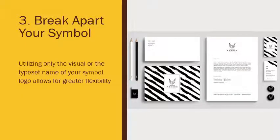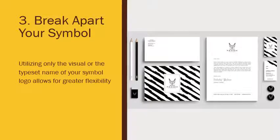The last option is to think about breaking apart your symbol. If you designed a symbol logo, you could utilize just the visual symbol and just the typeset name as separate alternates, allowing for greater flexibility. I like the Fennec logo example from earlier in the term — they use the full logo on the letterhead, the envelope uses just the typeset name, and premium items like the button use just the symbol. You can break apart the logo and use different pieces for different instances where it makes the most sense.